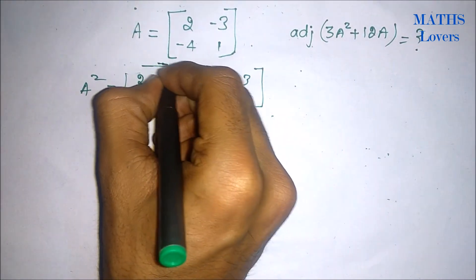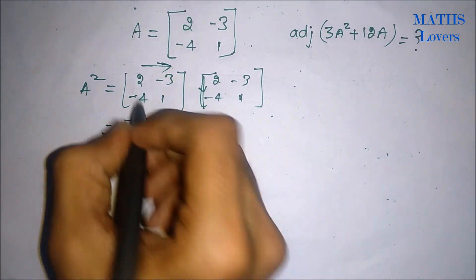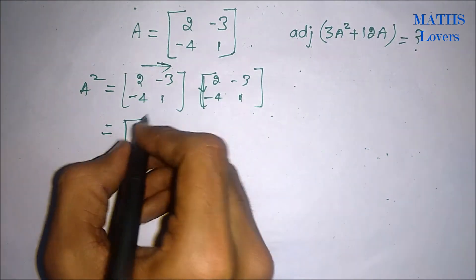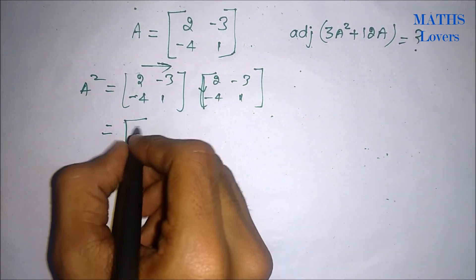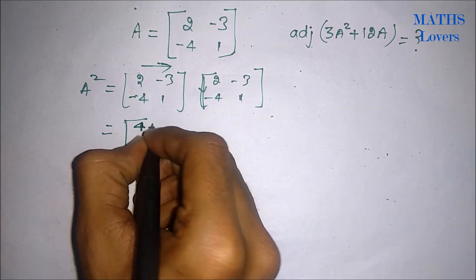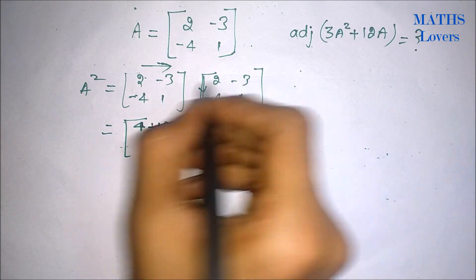We will multiply row by row into column wise. So if we multiply then it will be 2 into 2 minus 3 into 4, so 4 plus 12 that will be 16. And here we will write minus 2 into 3, minus 3 into 1, minus 6 minus 3.